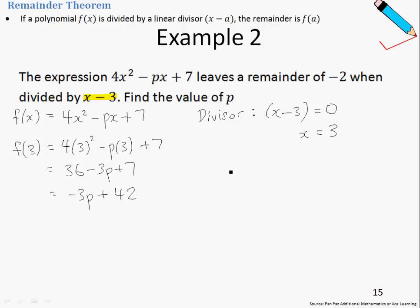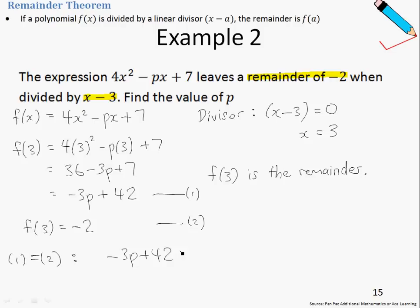Now, since f(3) is the remainder, and the question also says that the remainder is -2, then therefore we can say that f(3)=-2. And from here, from equation 1 and equation 2, we can say that they are the same. Therefore, -3p+42=-2.